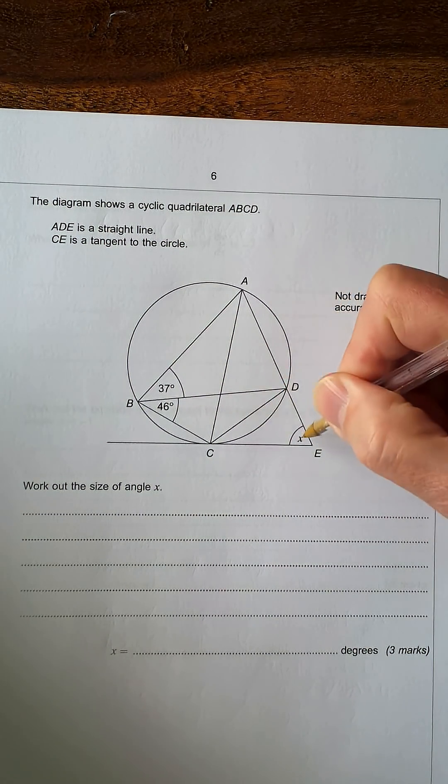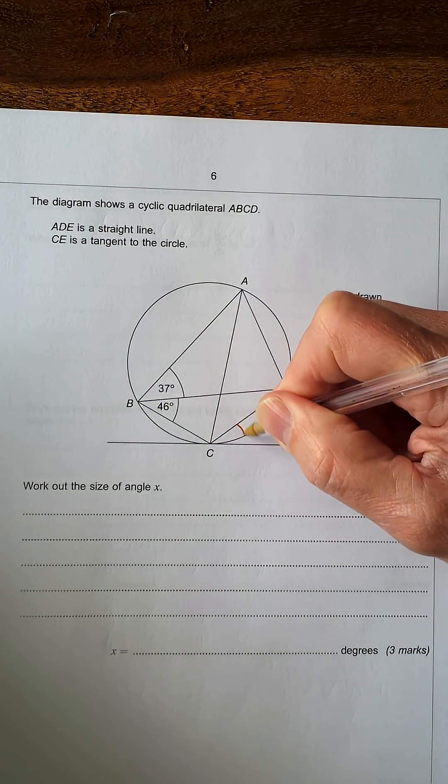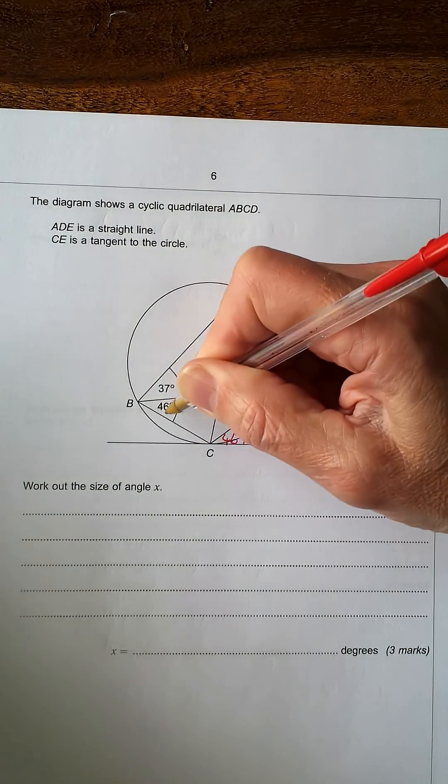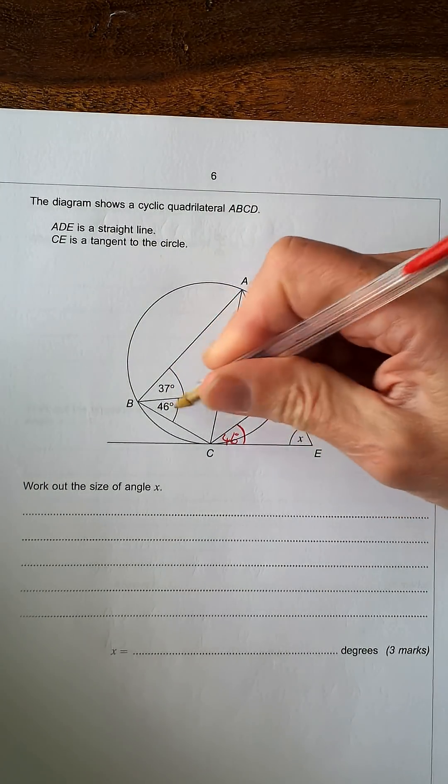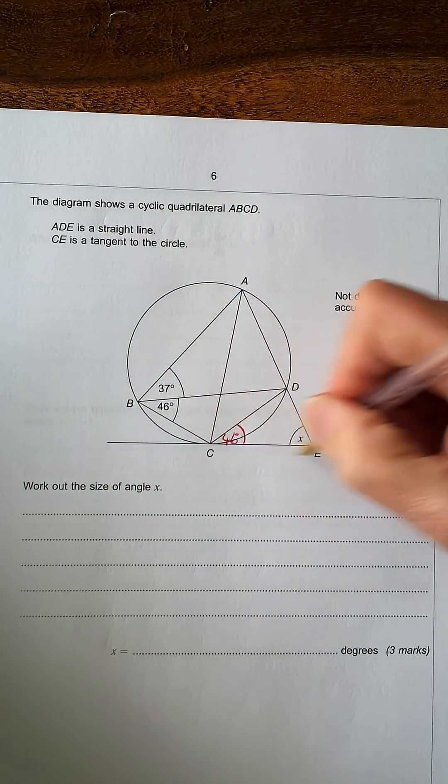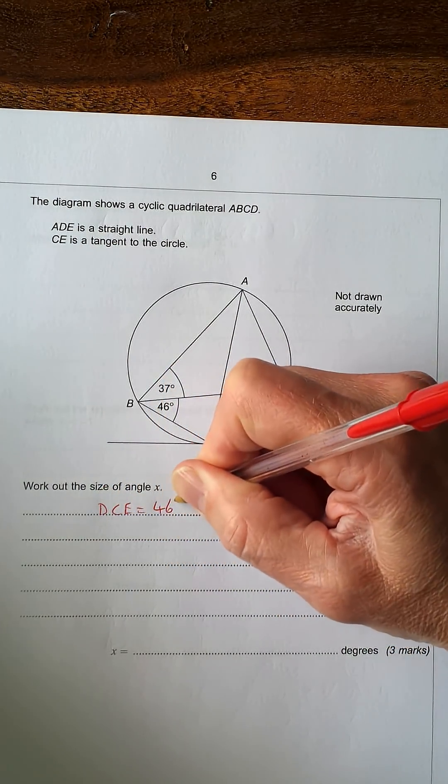We need to find angle X here, so we need to find the other two angles. So I'm going to find this one first, and this one is 46 degrees because it's alternate segment theorem. So that is DCE equals 46 degrees.